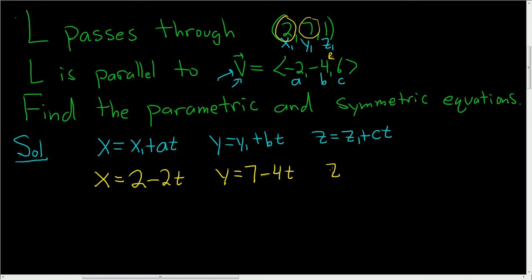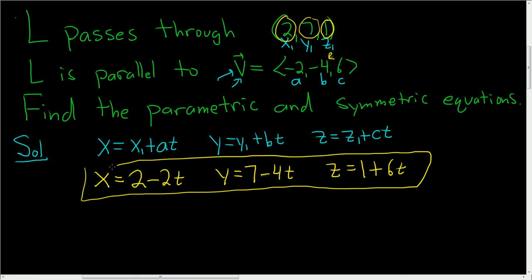And last but not least, Z is equal to Z₁, that's equal to 1, and then C is 6, so plus 6T. So these here are the parametric equations for our line.